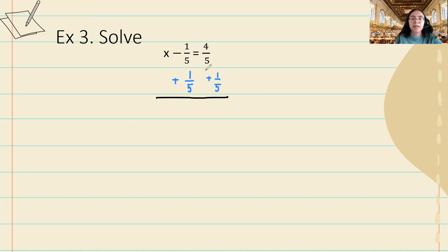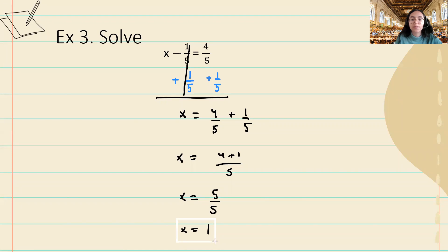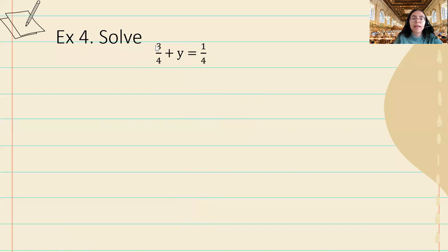These will cancel. I can bring down my x, bring down my equal sign, and perform the operation on the right. Because these two fractions have the same common denominator, we can simply add their numerators and bring our denominator along. Four plus one on the numerator will be five, and we can reduce this to one. So x is equal to one.